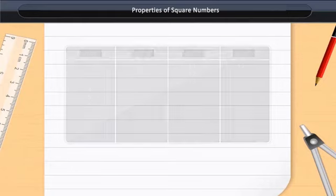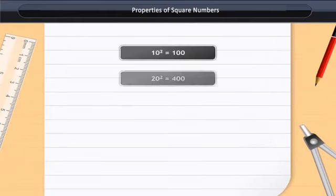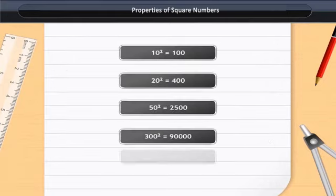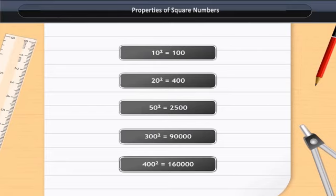Further, there should be an even number of zeros as the last digits of a square number. Any number with 3 zeros as last digits can never be a perfect square.